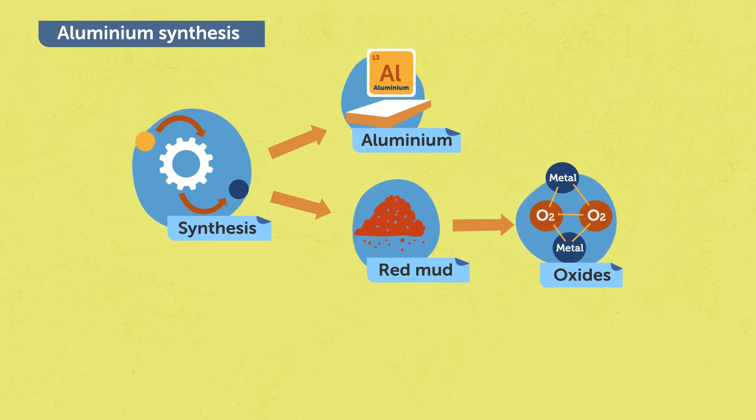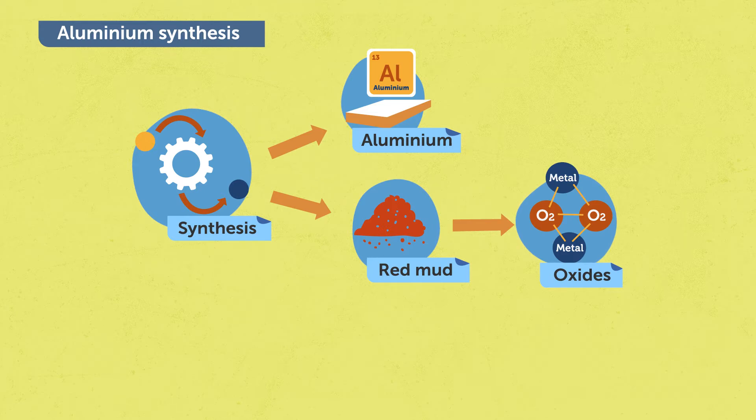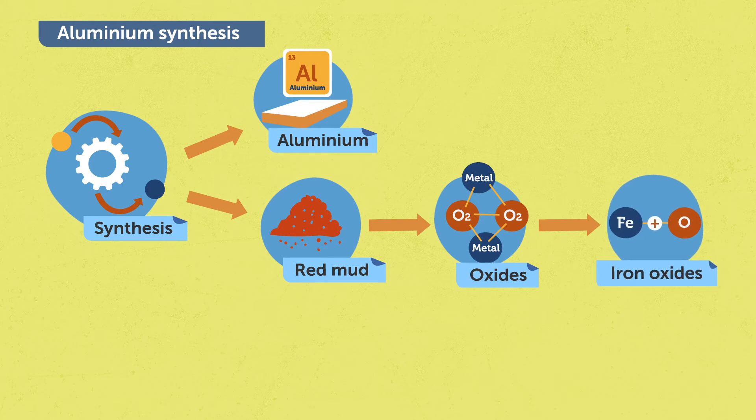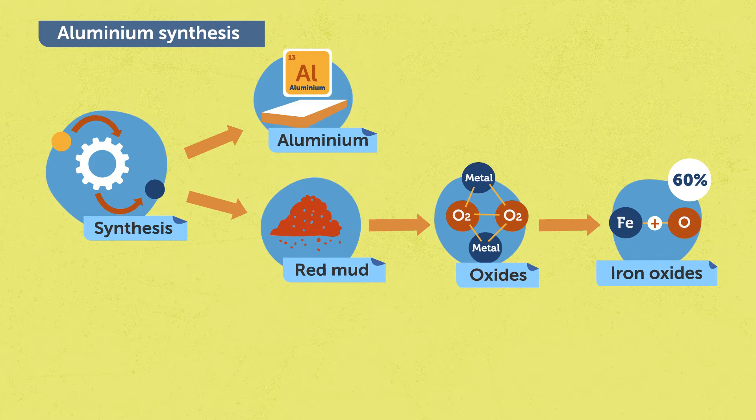Among these components that are present inside red mud, iron oxides can be present up to 6%. Nowadays, the total amount of red mud produced around the globe pile up to the gigantic value of 4 billion tons.